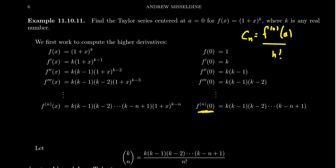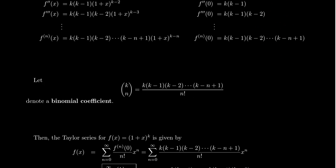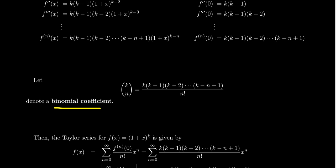This gives us a formula for the nth derivative of f evaluated at zero. We also need n factorial in the denominator, so the coefficient of the power series will be k(k-1)(k-2)···(k-n+1) divided by n factorial. This expression is abbreviated using the notation k-over-n in parentheses — with no fraction bar between them — and it's referred to as the binomial coefficient.